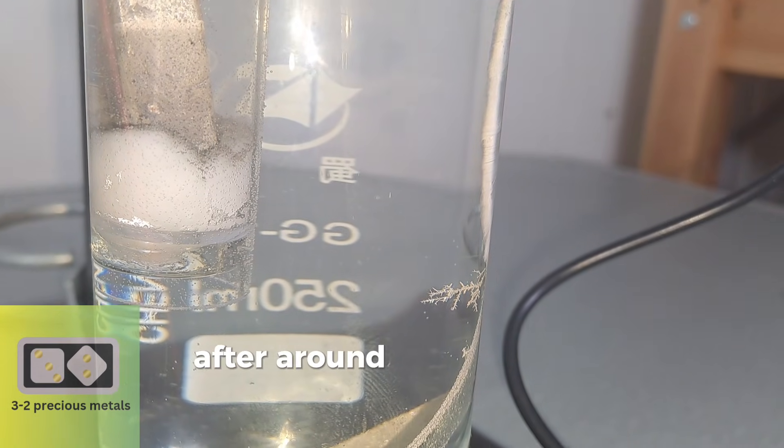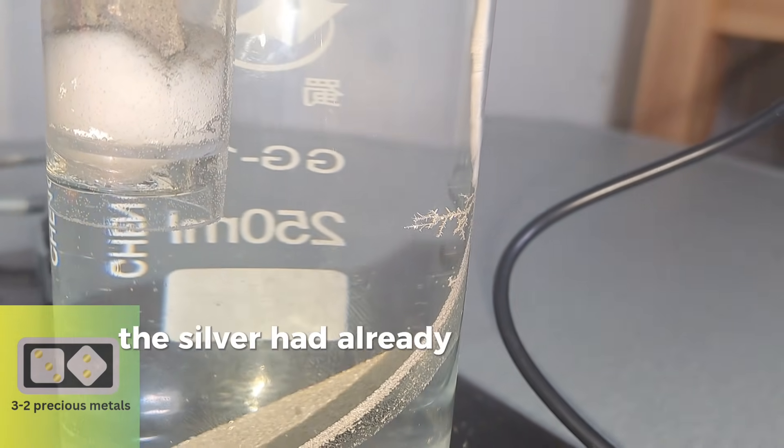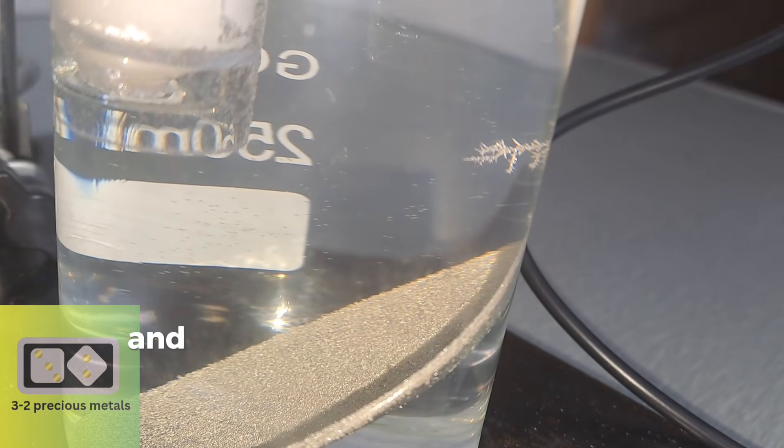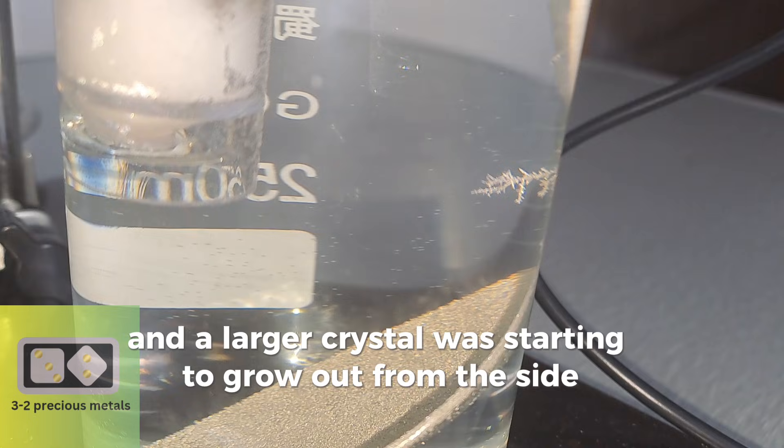After around 15 minutes, the silver had already covered the bottom of the spoon with tiny fine crystals and a larger crystal was starting to grow out from the side.